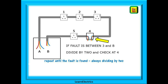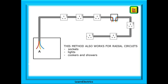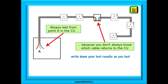Repeat this divide by two until you've narrowed down the problem to just one cable — hopefully it is now easy to spot your problem. We've shown here a ring circuit but it works just as well for radial circuits, radial sockets, lighting, cookers, showers etc. It is an excellent fault tracing method. Always be consistent and test from point A in the consumer unit each time, and write down your test results as you move around the circuit. I also quickly sketch the circuit to help me understand the layout. If you write it down you don't need to remember it — just remember where you wrote it.